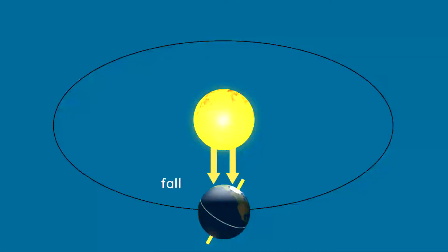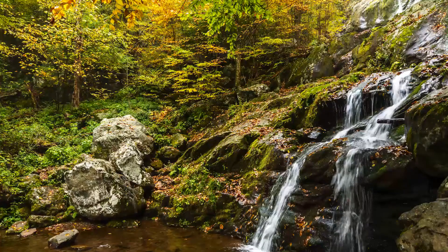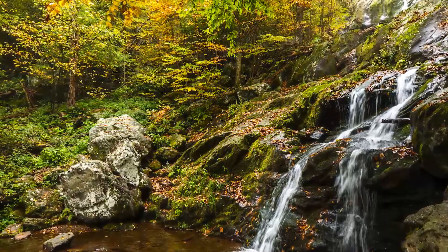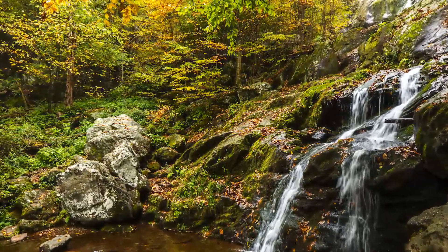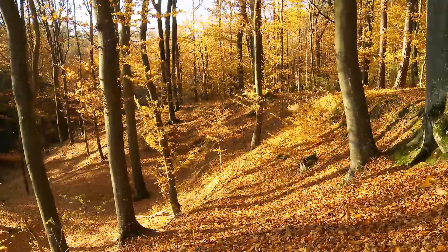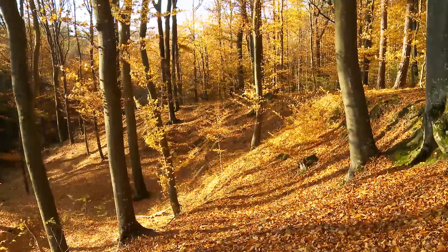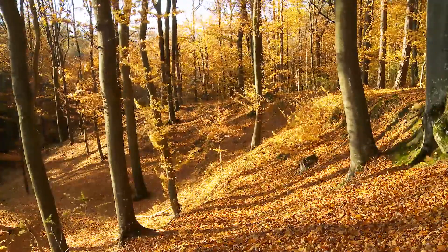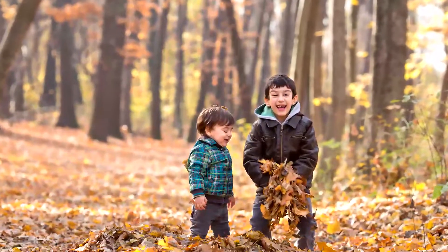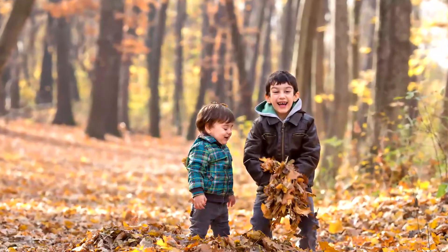Fall is the season after summer. Fall is the time of year that Earth is beginning to tilt away from the sun. Fall has fewer hours of daylight than summer, and the temperatures are cooler. Since there are fewer hours of sunlight in the fall, plants do not grow as quickly. In some places, leaves turn orange, yellow, and red, and fall off trees.